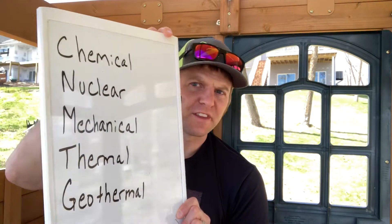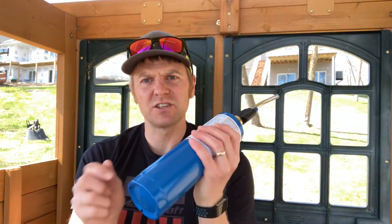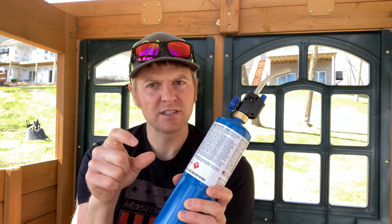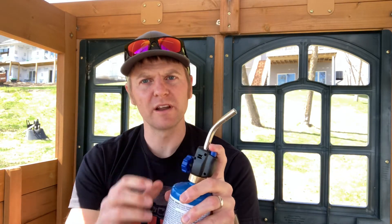The first one is chemical energy — that's energy stored in chemical bonds. Right here I've got a propane cylinder and a torch. The chemical bonds store energy, so when you break those bonds you release thermal energy. A protein bar has chemical energy in it too — your body releases that through the process of cellular respiration.